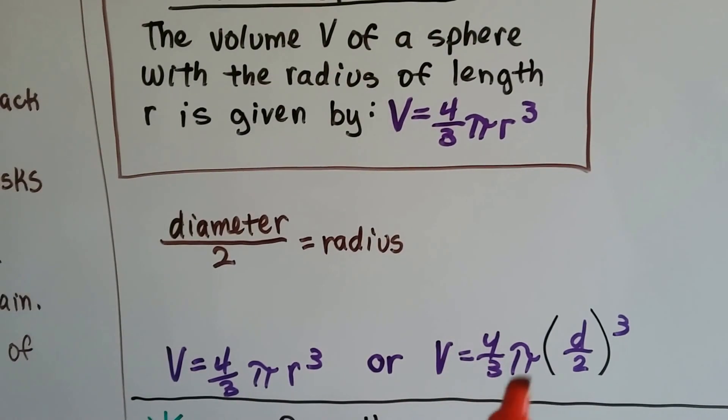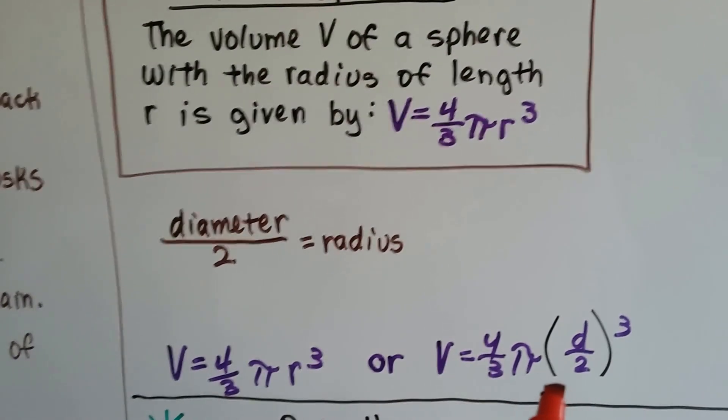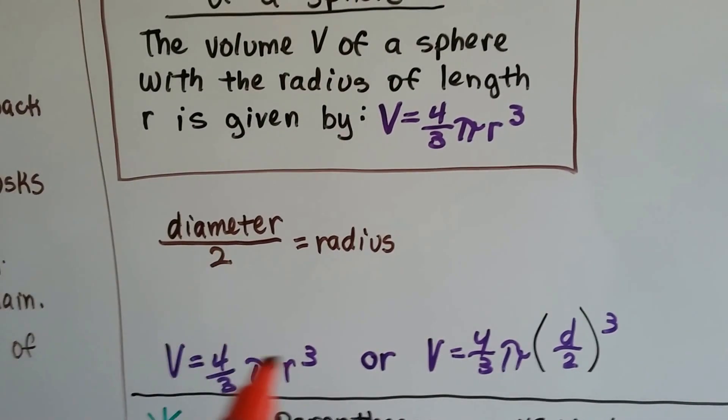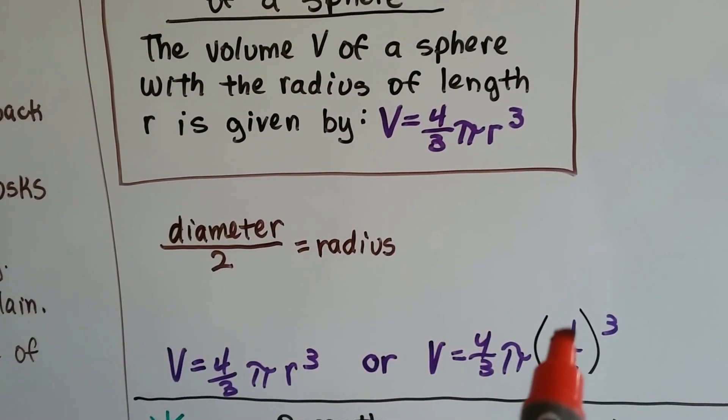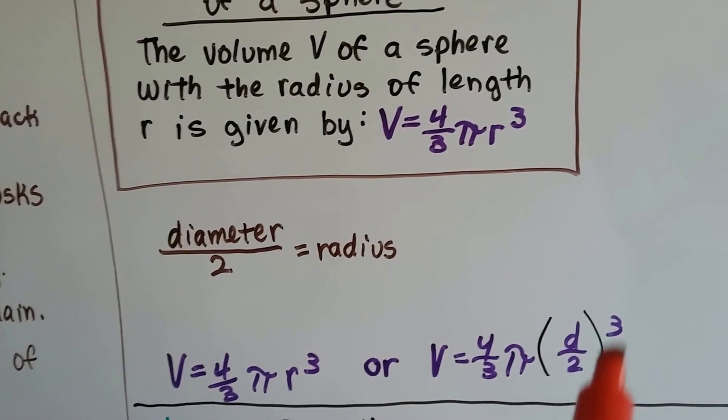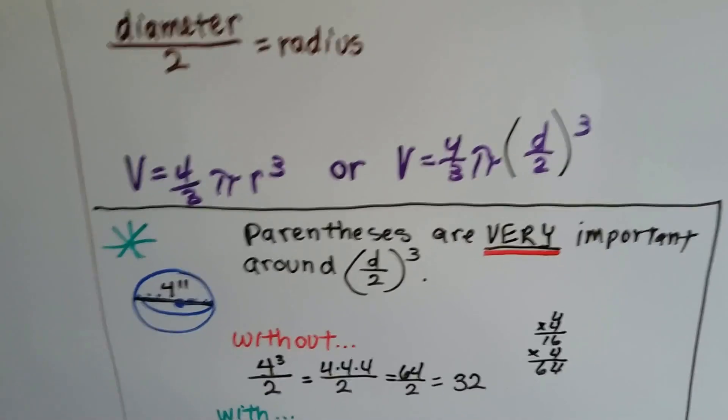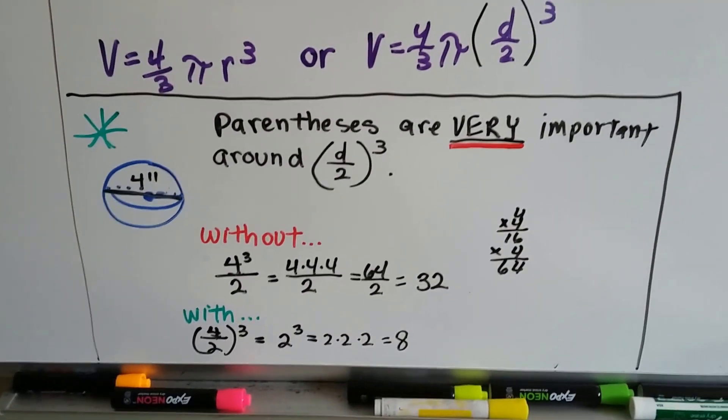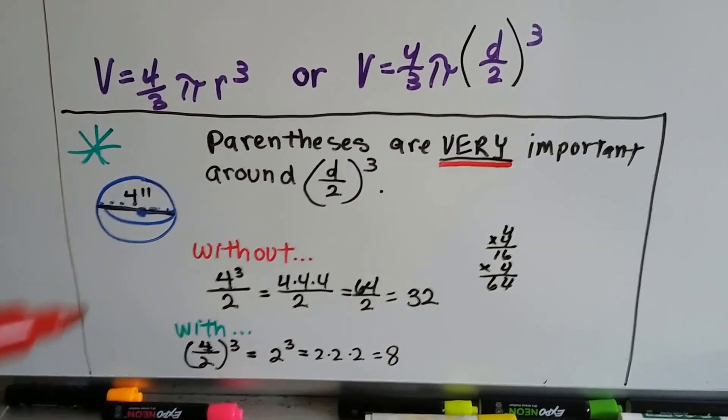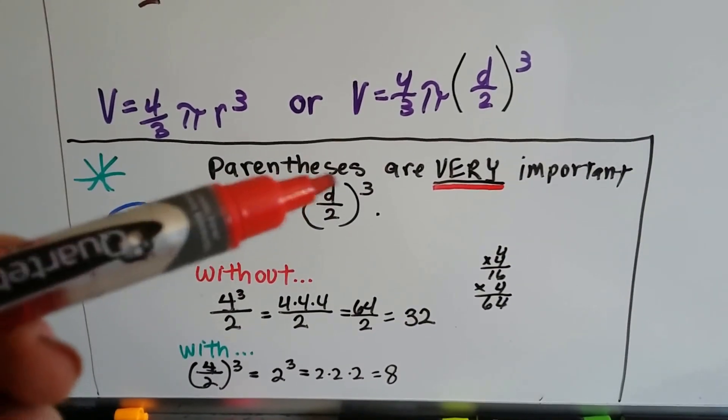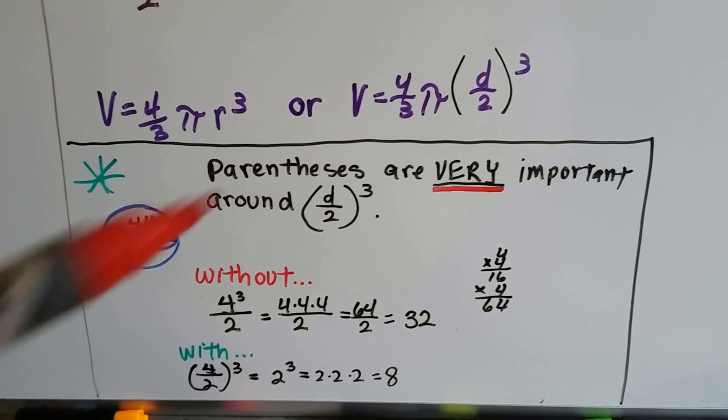You can also write it so that the diameter is divided by 2 inside of parentheses cubed. The parentheses are very important, and I've spoken about this before, but I figured it might be smart to just redo this. It's so important to have these parentheses around the fraction d over 2 and then have the exponent on the outside.